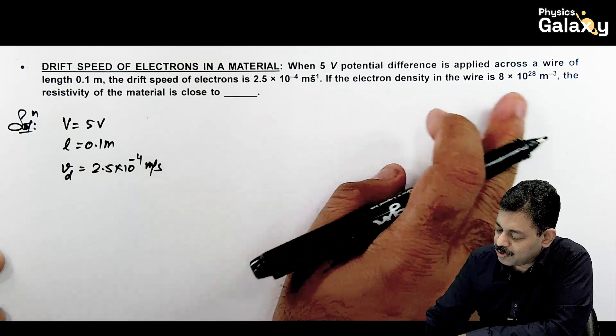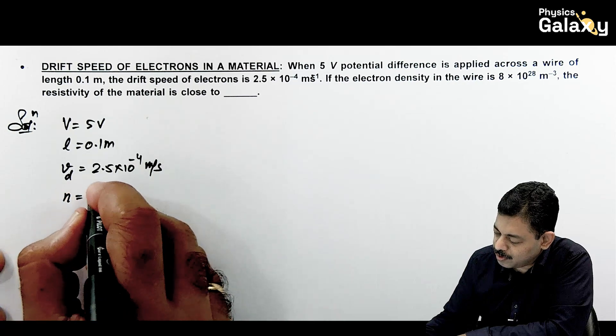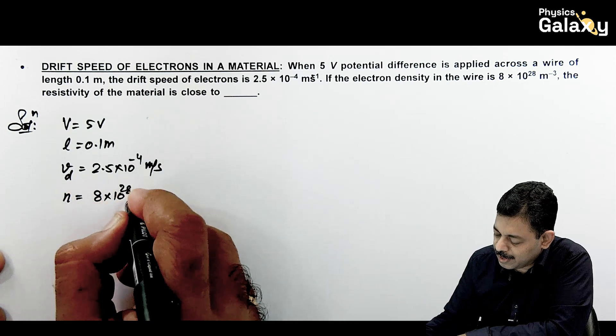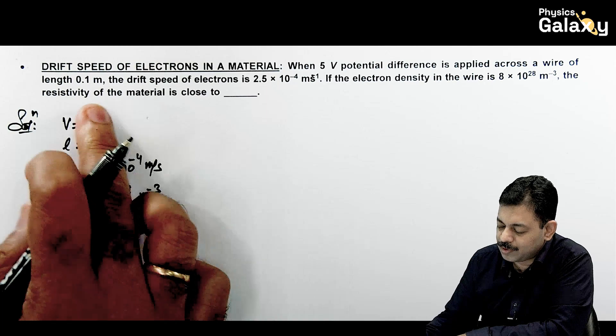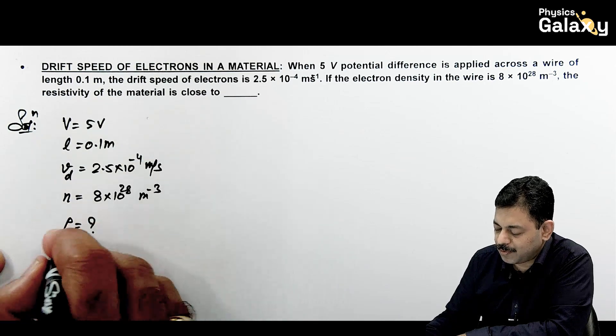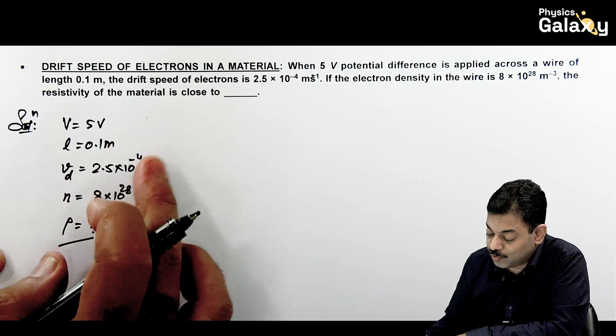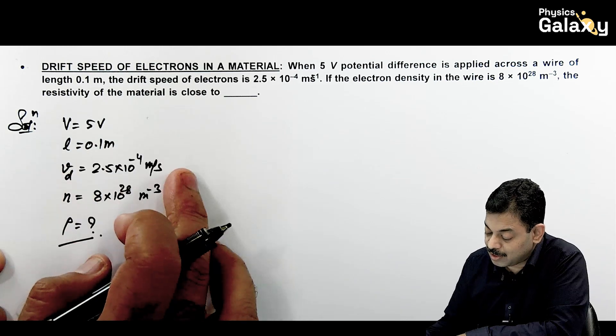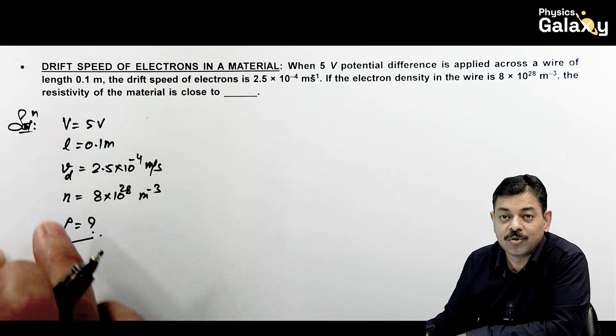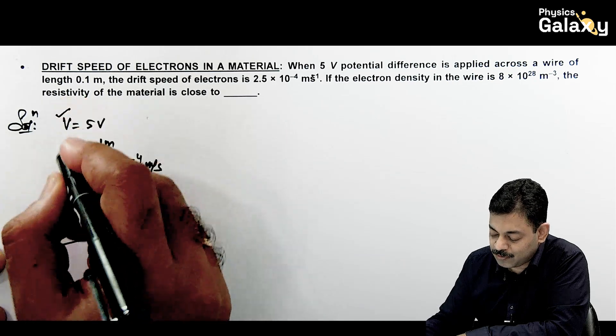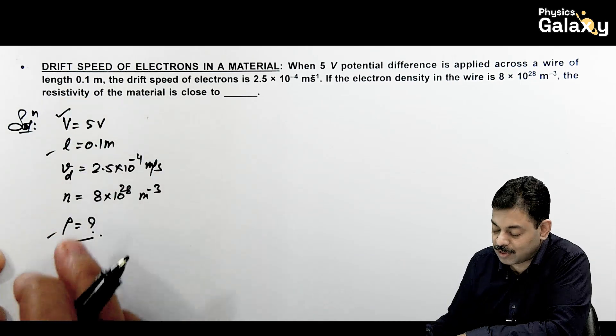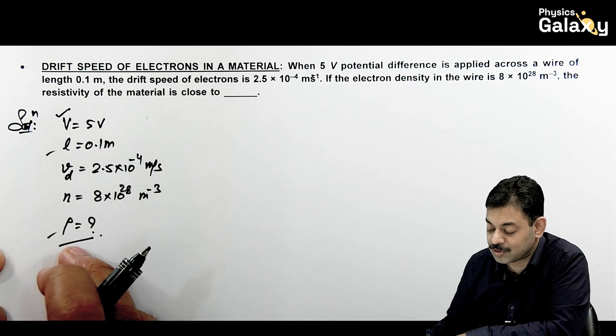If electron density in the wire small n is also given 8 into 10 to the power 28 per meter cube, and the resistivity we want to calculate. In this situation, students sometimes get confused that VD is J over NE. So from here J will come out, we are going to manage. You can carefully see potential difference is given, length is given, resistivity is given, that means we need to make use of resistance.